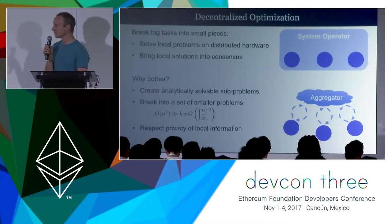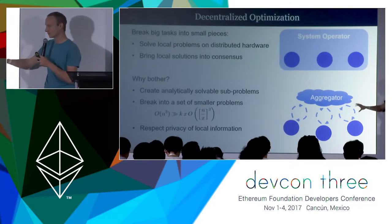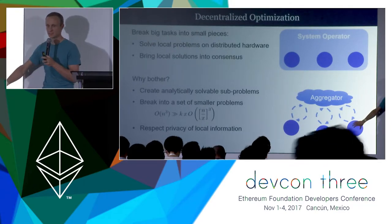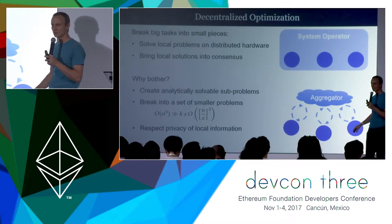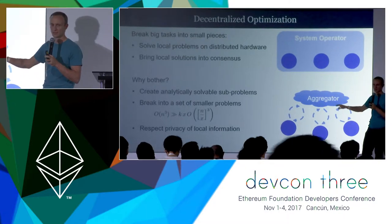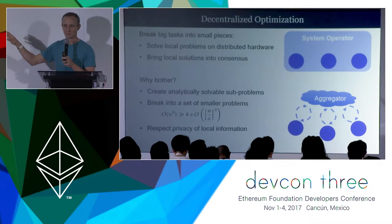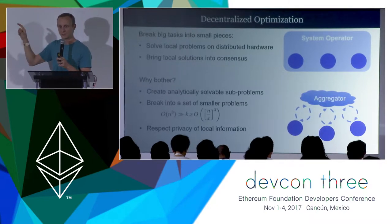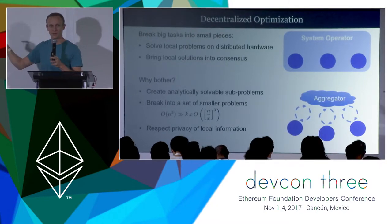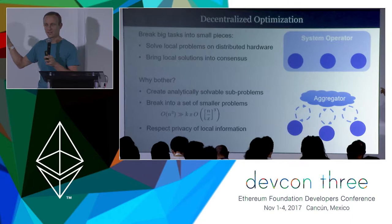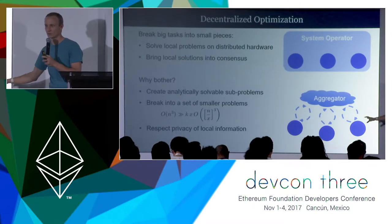Decentralized problems break that into a set of local optimization problems — these blue dots — that then coordinate back and forth with an aggregator until they reach consensus on that global optimum. This is really important. We're actually able to guarantee that we're going to hit the global optimum even though we start with these local problems.